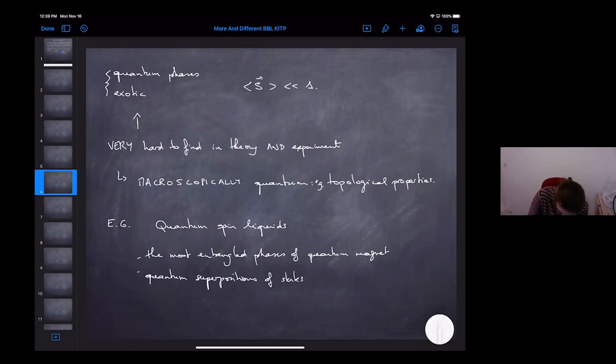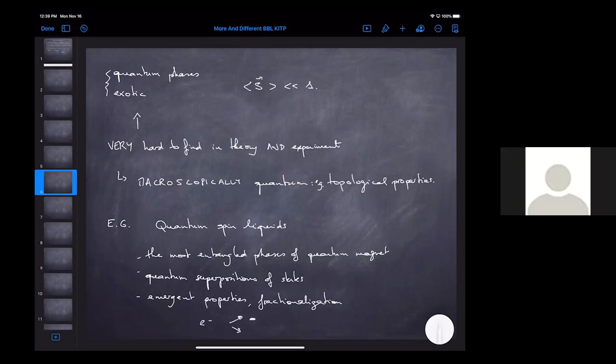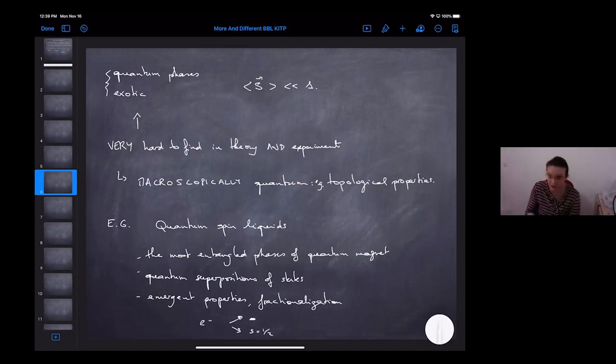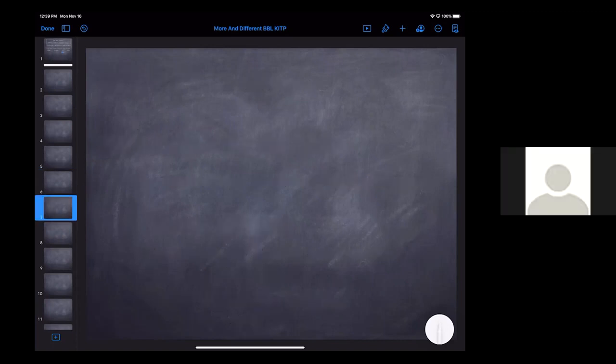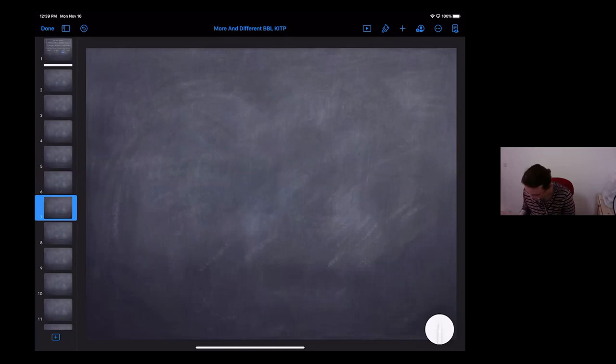Leon Balents, who's a key permanent member here at KITP, is one of the world experts on this. These are basically the most entangled phases of quantum magnets. They are quantum superpositions. And this leads to emergent properties I might call fractionalization.